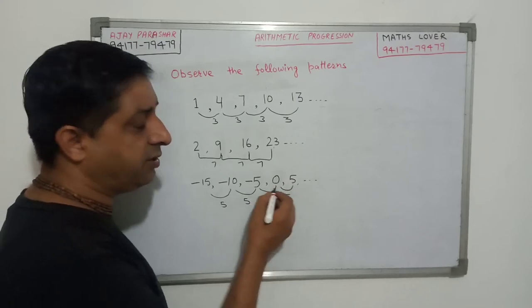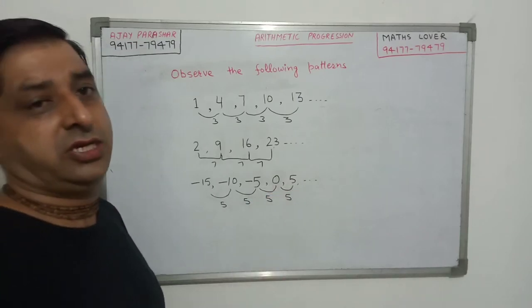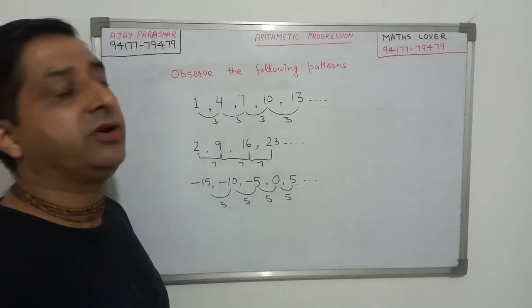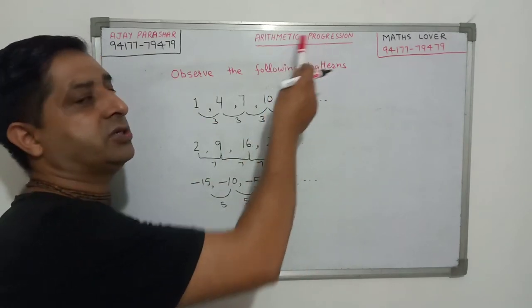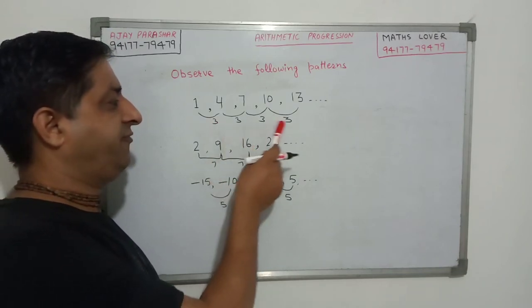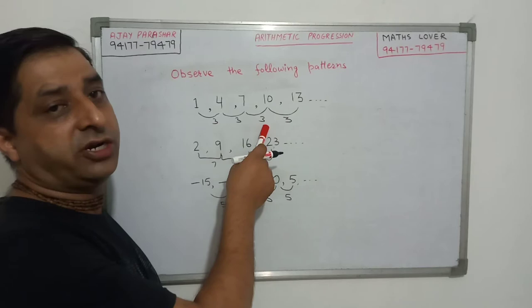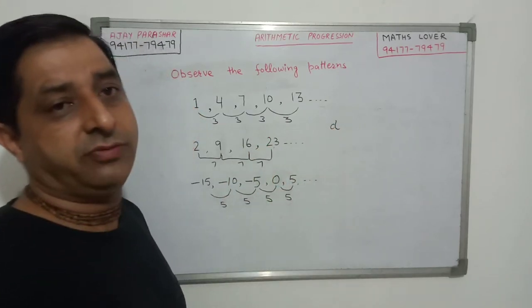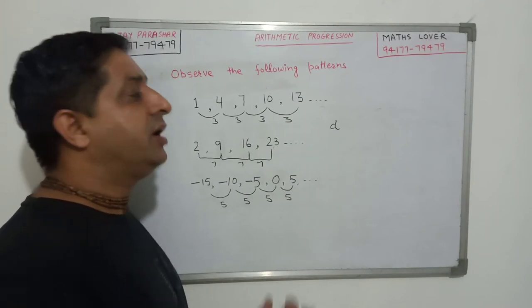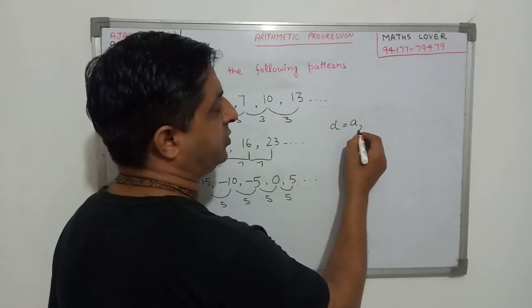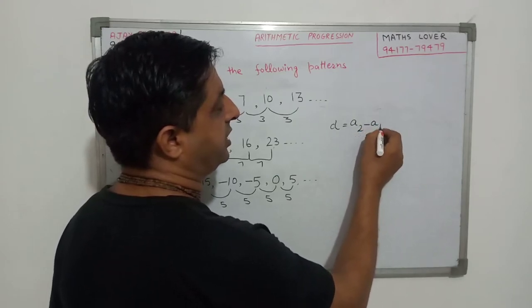Such patterns or sequences in which the difference between the two consecutive terms is same we call them arithmetic progression or simply AP. And this difference we call common difference and we denote it by the letter D. D may be positive, negative or 0. And to find the D we generally use this formula D is equals to A2 minus A1.